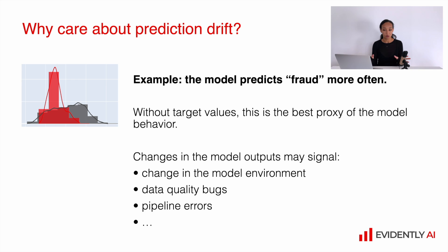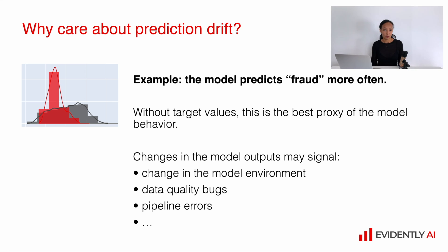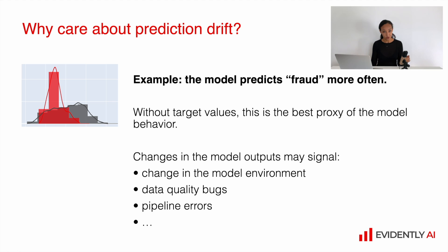So why should we care about prediction drift? Let's take a look at the example of fraud detection. Imagine that just out of the blue your model started to predict fraud more often. If we see changes in the model's output, it can happen because the environment has changed — maybe there are changes in the input features, or maybe there are data quality bugs like broken prediction pipelines, broken data pre-processing pipelines, or even some bugs in the source data. This is why prediction drift is quite a strong signal of potential problems with the model.